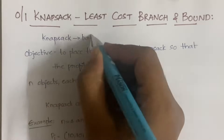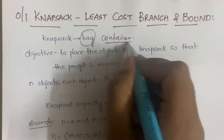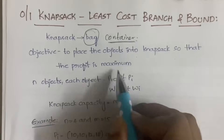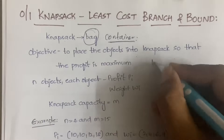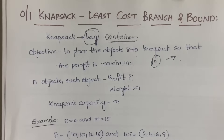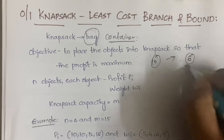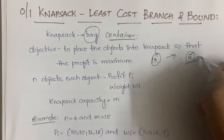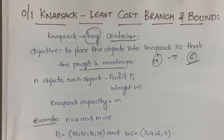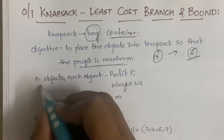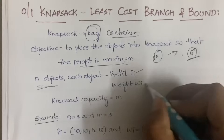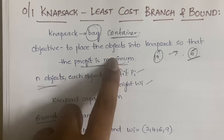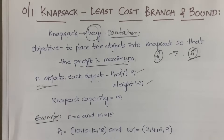What do we mean by knapsack? A knapsack is nothing but a bag or container. In this container you have to place objects so that the profit is maximum. Suppose you have ten objects — you should place as many objects as possible into the knapsack. Maybe the capacity of the knapsack is only six, but your target is that the profit should be maximum. There will be n number of objects and each object has its individual profit and weight associated with it. Profit determines maximum profit and weight determines capacity.